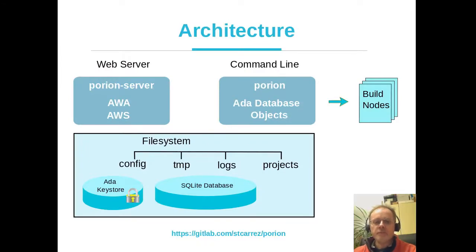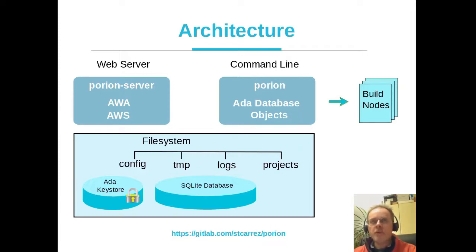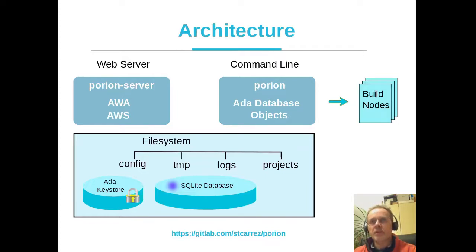Let's look at the architecture. The project has two binaries: a web server binary and a command line binary, both written in ADA. The web server is built on top of ADA Web Application and ADA Web Server. The command line utility is built on top of the database objects library. On the file system we have config, TMP, logs, and project directories. An SQLite database contains information about projects, receipts, builds, and so on. For secret and sensitive information I'm using the ADA Key Store, which uses several encryption keys — locked either by a user password or by a GPG key. Project sources are extracted in the project directory.